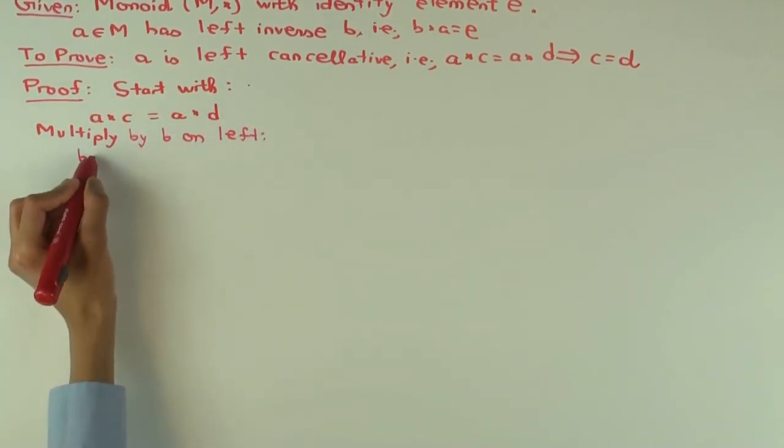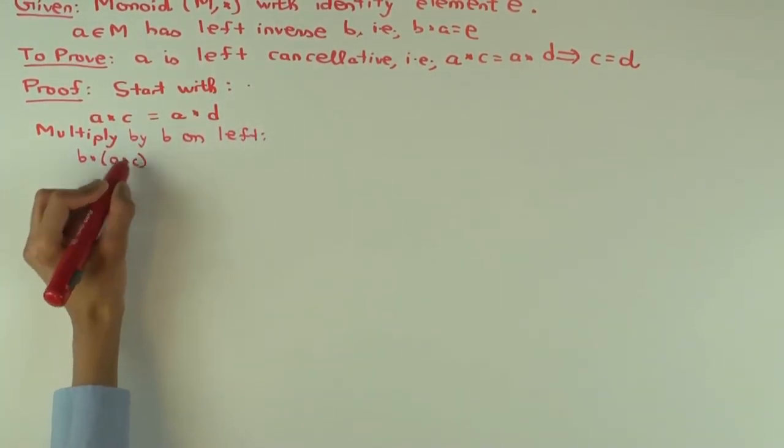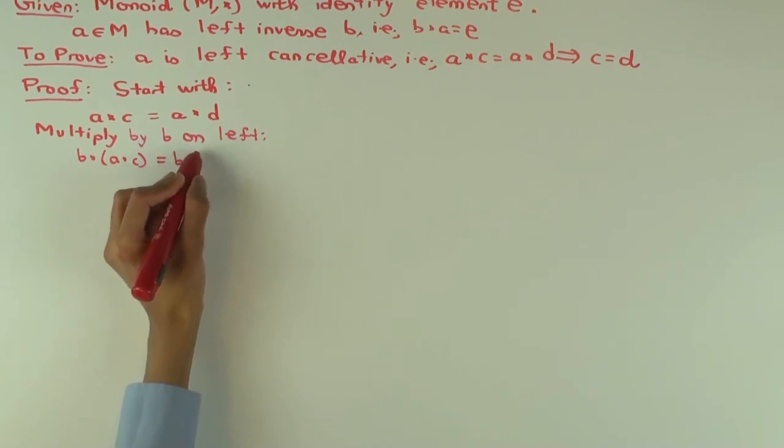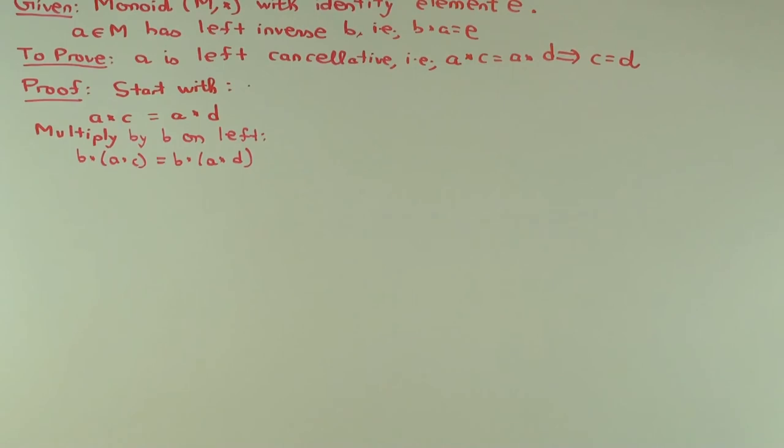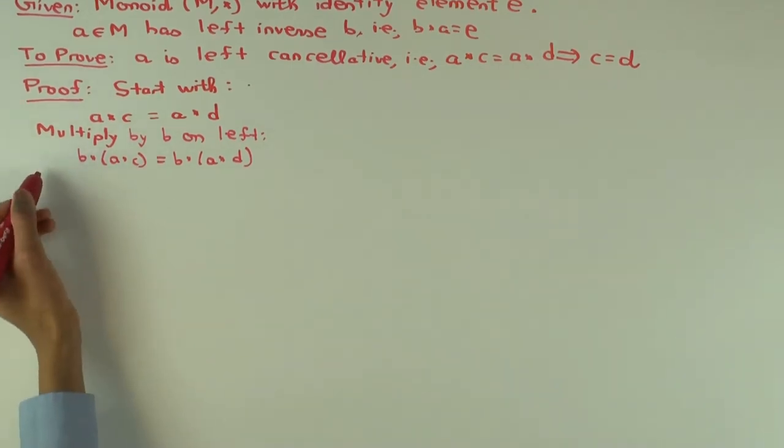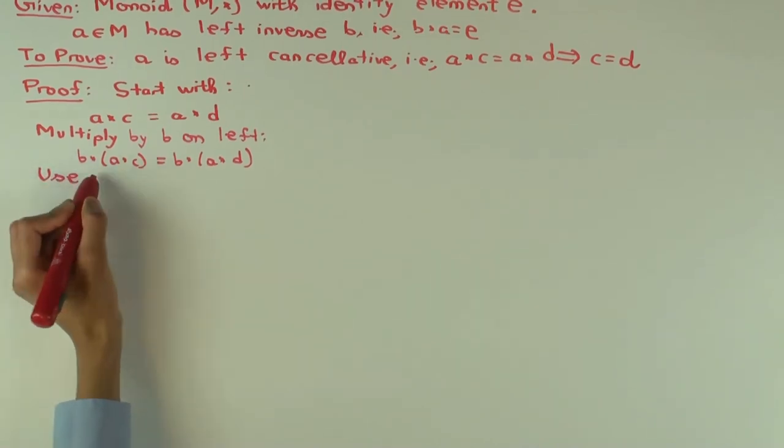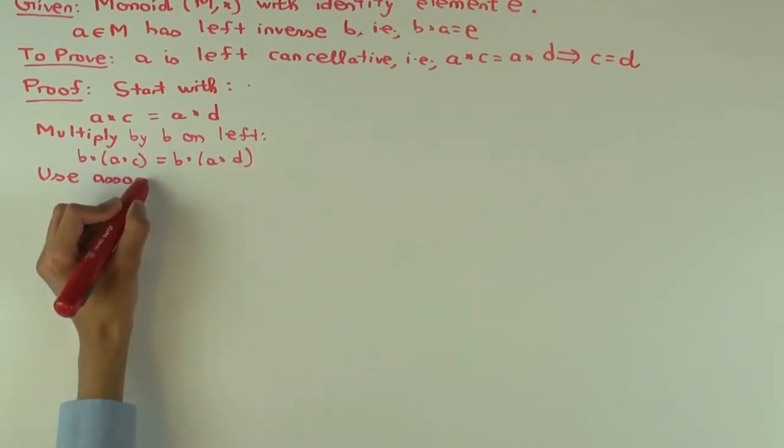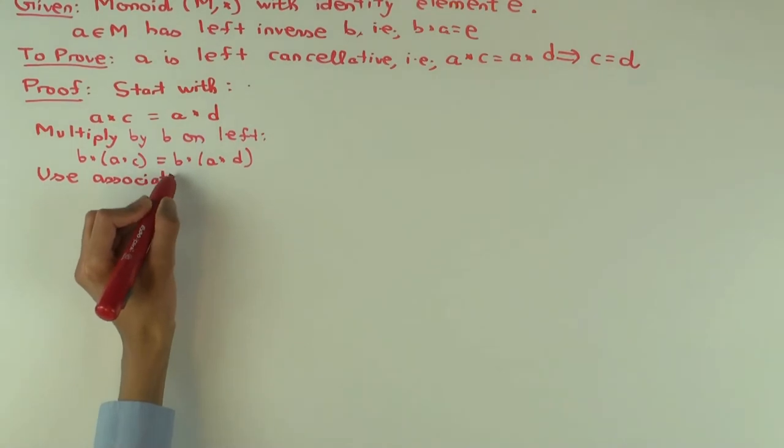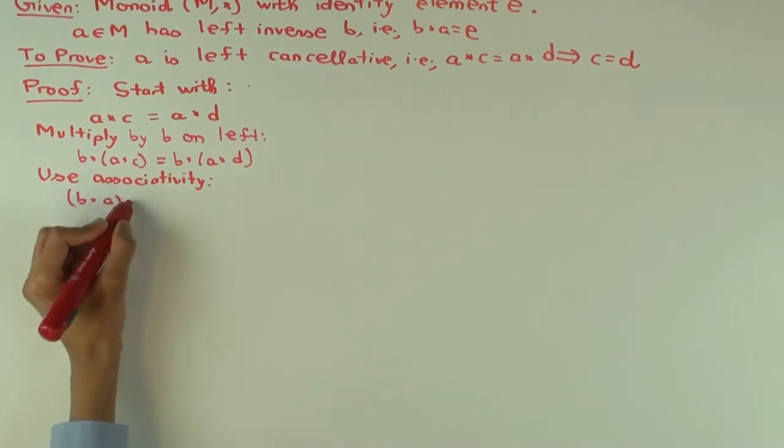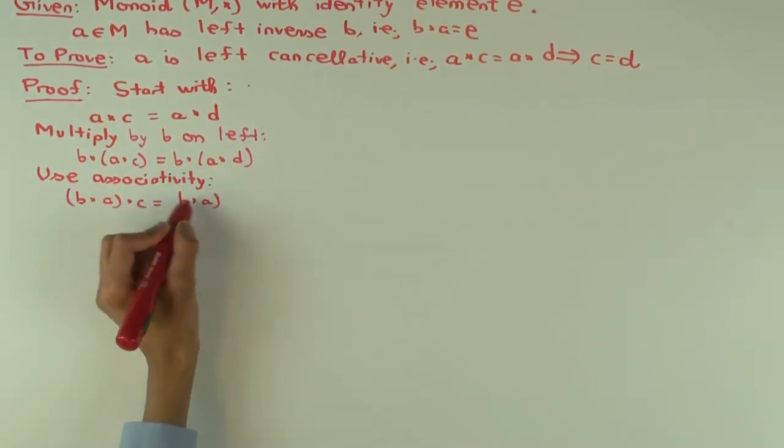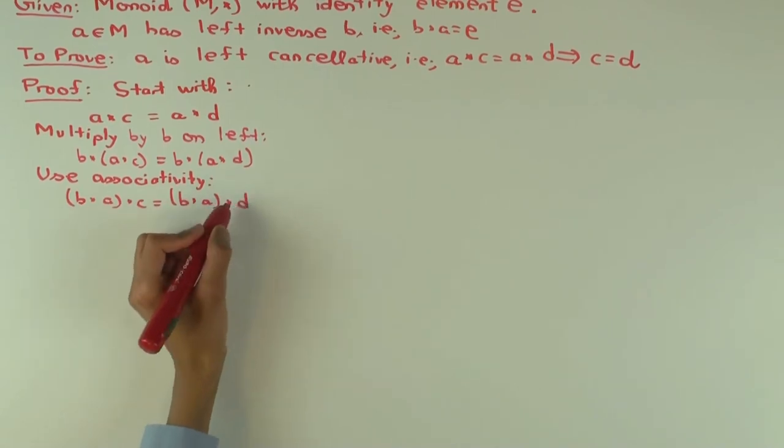So multiply by B on the left. What do we get? We get B star (A star C) equals B star (A star D). Now we use associativity to get (B star A) star C equals (B star A) star D.